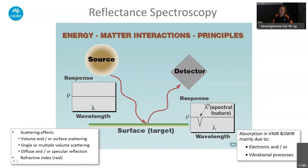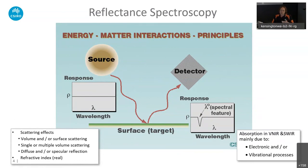Starting with the basics: reflectance spectroscopy is quite simple in the end. We have a light source — shown on the top left of this slide — which can be a light source in the spectrometer like a field spectrometer, or it can be the sun if you're using remote sensing. We basically analyze the radiation emitted from the light source as it interacts with the surface material of interest — it could be the Earth's surface or our drill core. There's a quite complex combination of scattering processes — volume and surface scattering, diffuse and specular reflection.